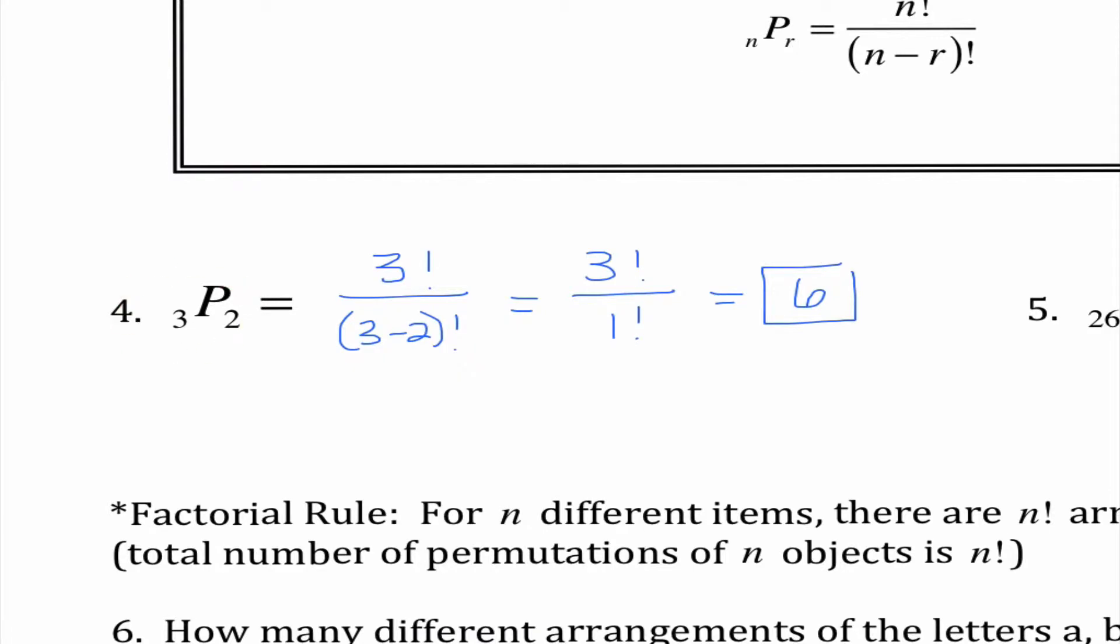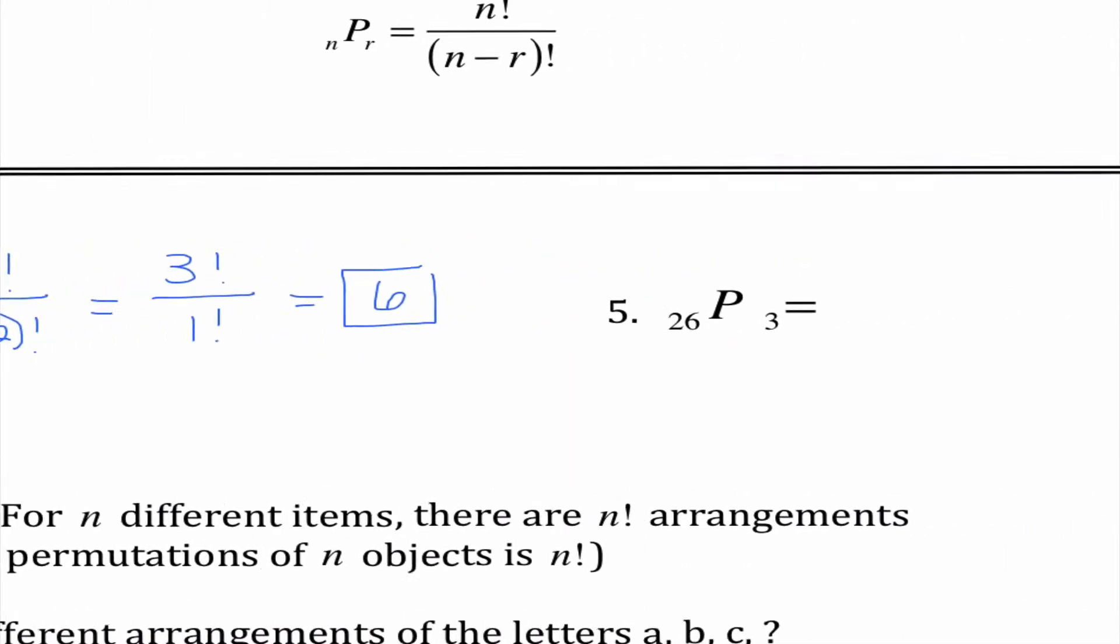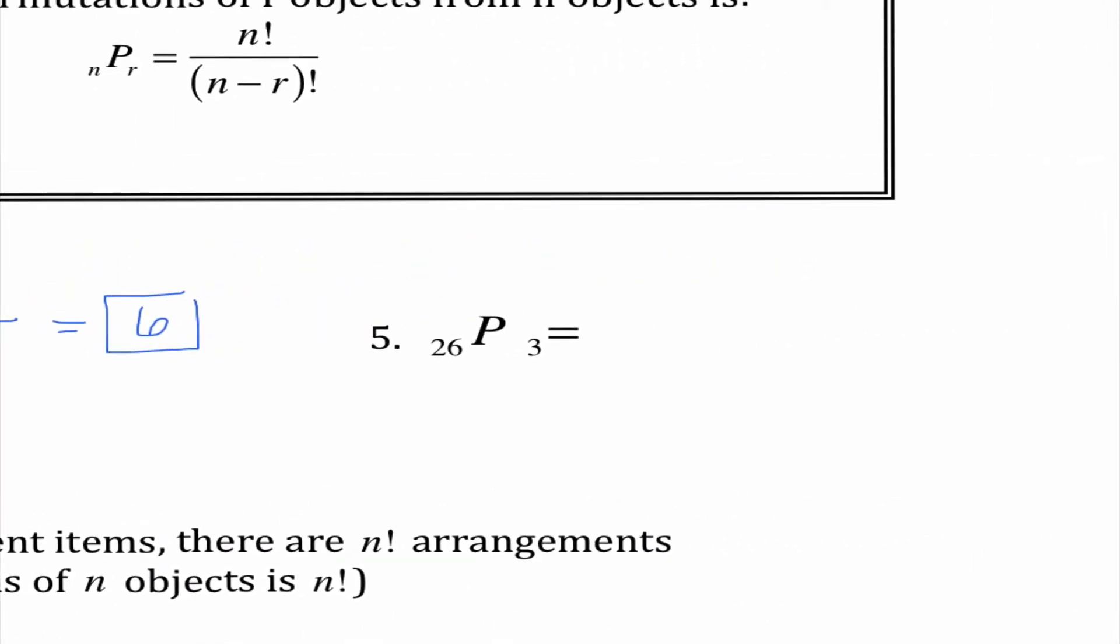So what this is telling me is if the order matters how many arrangements can I have of two letters if I'm choosing from three. So this is like the very first problem we saw where we saw there were actually six different ways to do it.